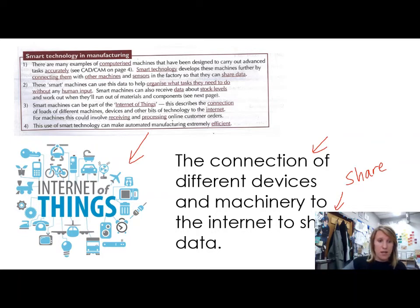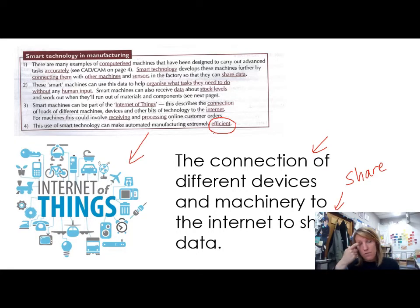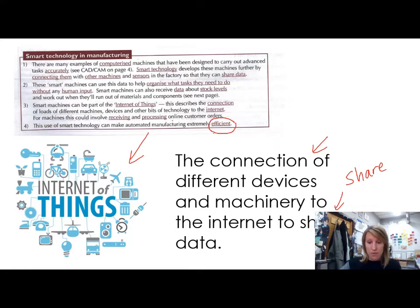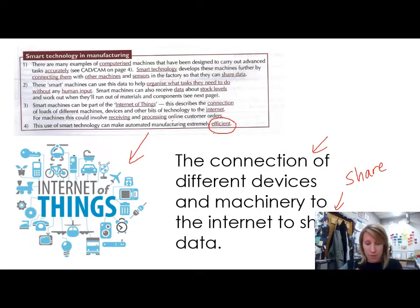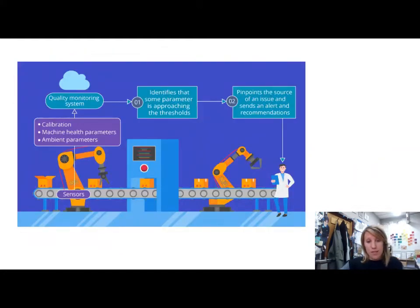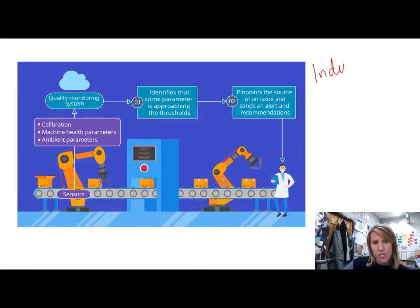This makes things really, really efficient. For example, if you had some machinery in your factory that was using a particular piece of material and it ran out, because it's connected to the Internet it could communicate that, and more material could be ordered automatically rather than someone having to come up and notice. So there's an example here of how this is used in manufacturing — kind of an industry example.